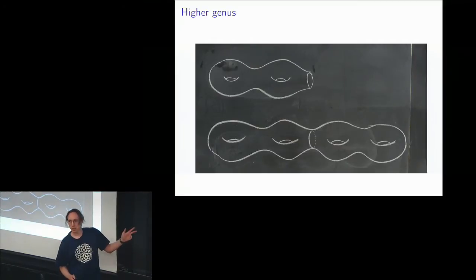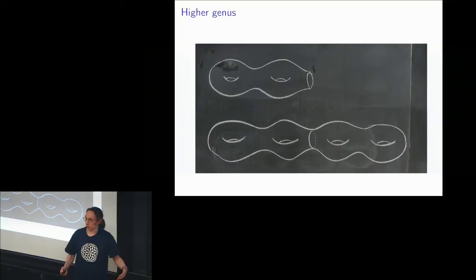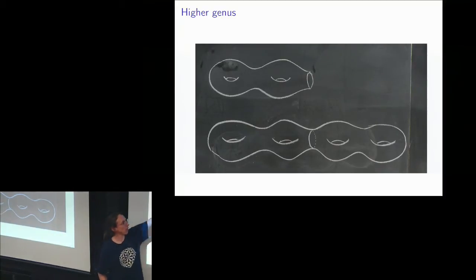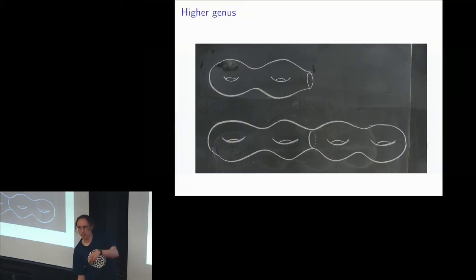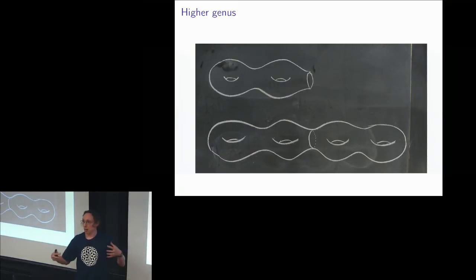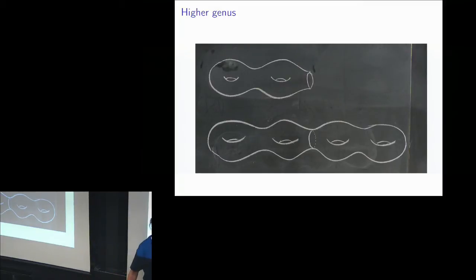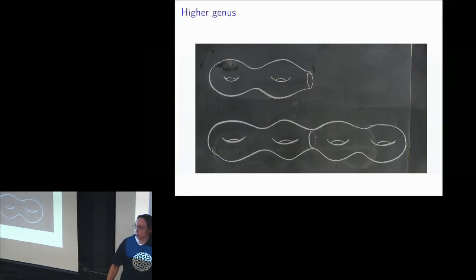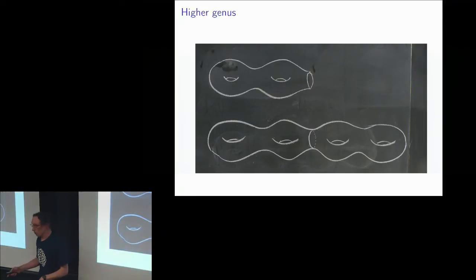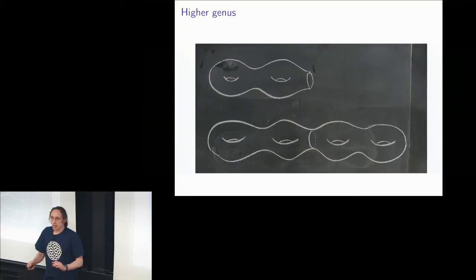It's possible to have much bigger surfaces. We define something called the genus of a surface — the genus is the number of handles, like a piece of luggage with handles. This is a surface with two handles and one boundary component. If I double it across the boundary, then I'll get a surface of genus 4. That's an introduction to surfaces.